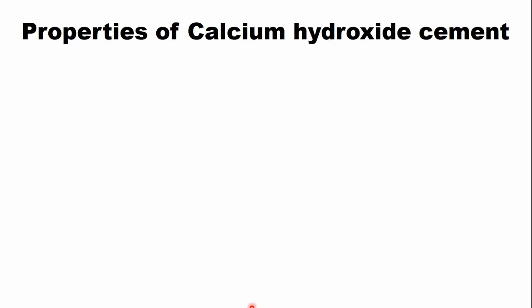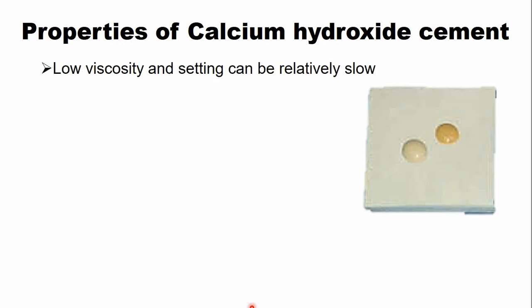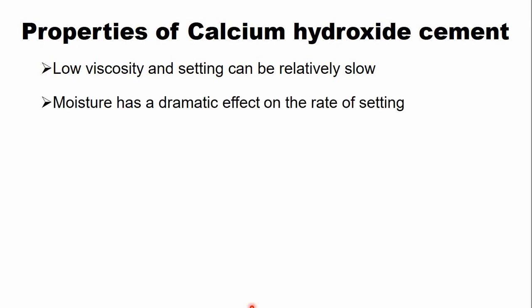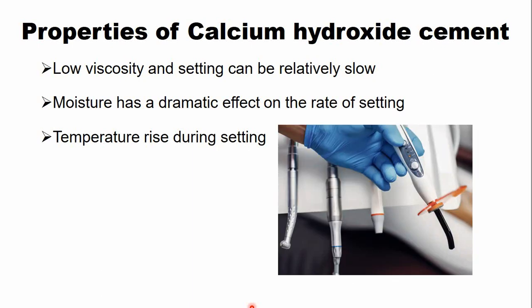The calcium hydroxide cement is a low-viscosity cement and the setting is relatively slow. However, moisture has an effect on setting — moisture results in a faster set of the cement. There is a temperature increase during setting, and this temperature increase is more pronounced with light-cure or light-activated calcium hydroxide cement.